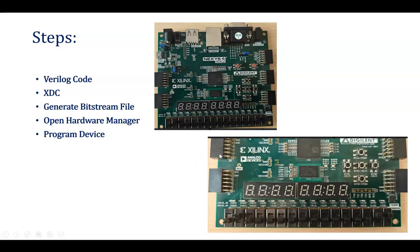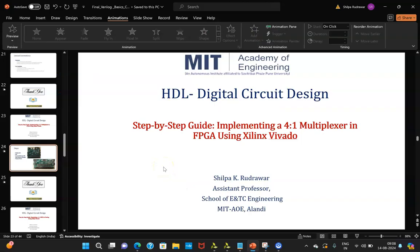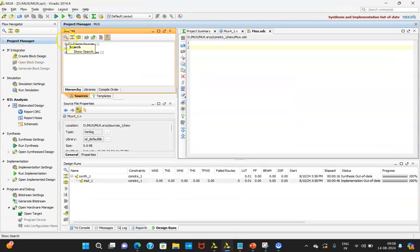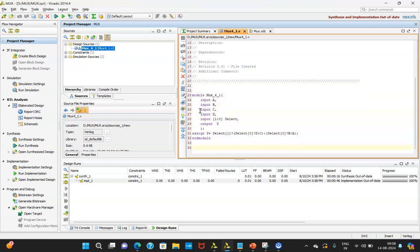Zooming out, you can see the 16 inputs and 16 outputs. When configuring the XDC file, you can assign pin V10 to A, U11 to B, U12 to C, and H6 to D. Assigning them sequentially makes it easier. For the select lines, I will be using L16 as MSB and J15 as LSB. The output will be observed at pin V11.